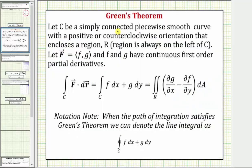For review, Green's theorem states, if C is a simply connected piecewise smooth curve with a positive or counterclockwise orientation that encloses a region R, and if the vector field F has components little f and little g that have continuous first order partial derivatives, then the line integral can be written as a double integral over the region R.